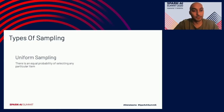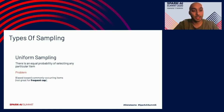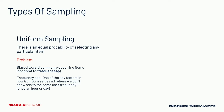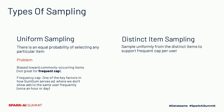The most common form of sampling is uniform sampling, where there's an equal probability of selecting any item. The problem is it's biased toward commonly occurring items, which is not great for frequency cap. Frequency cap is a key factor in how GumGum serves ads — we don't show the same ad to the same user more than once an hour or once a day. So we use a modified version called distinct item sampling, where we sample uniformly but from distinct items. In our use case, a distinct user is identified by a hash of their user IP. The algorithm we use is augmented MinHash distinct item sampling, keeping up to m distinct items per sample.